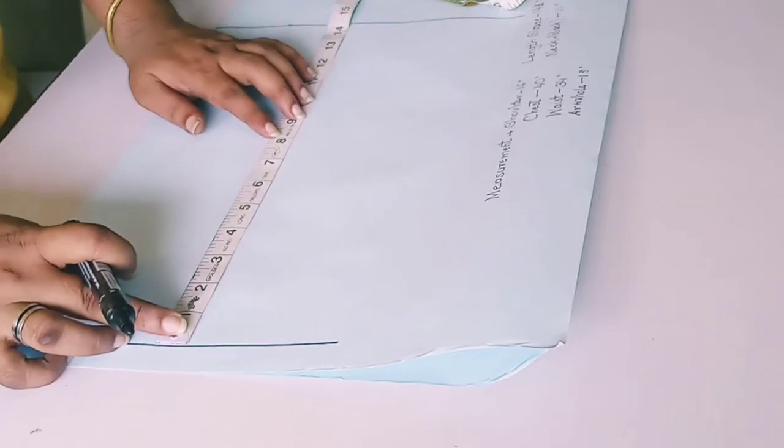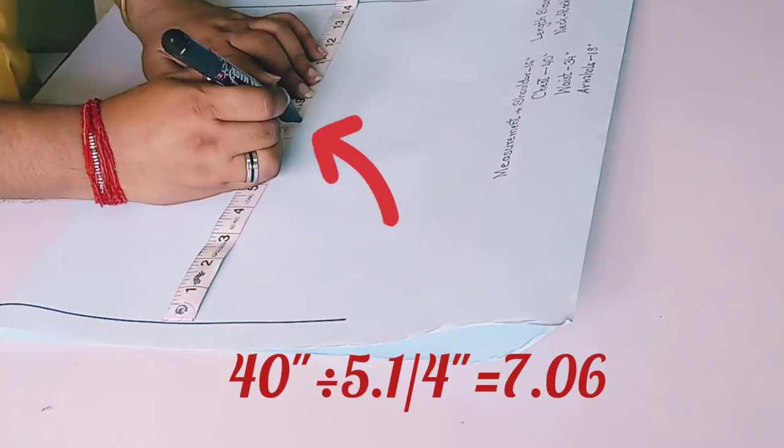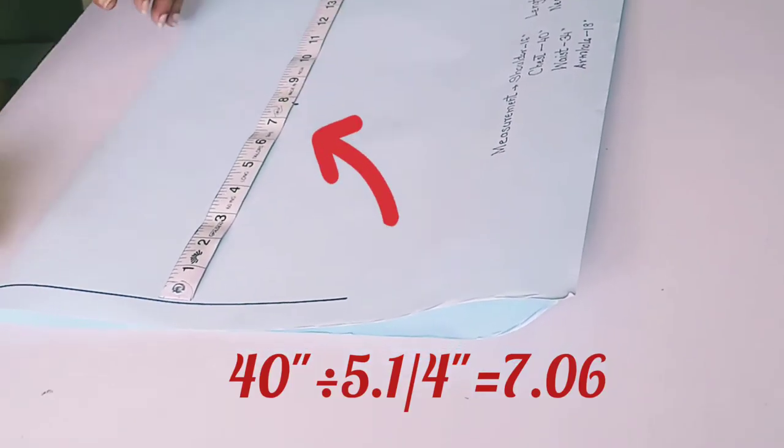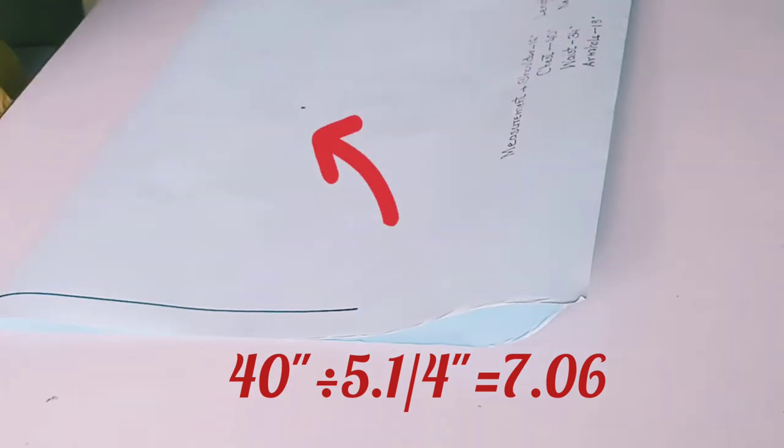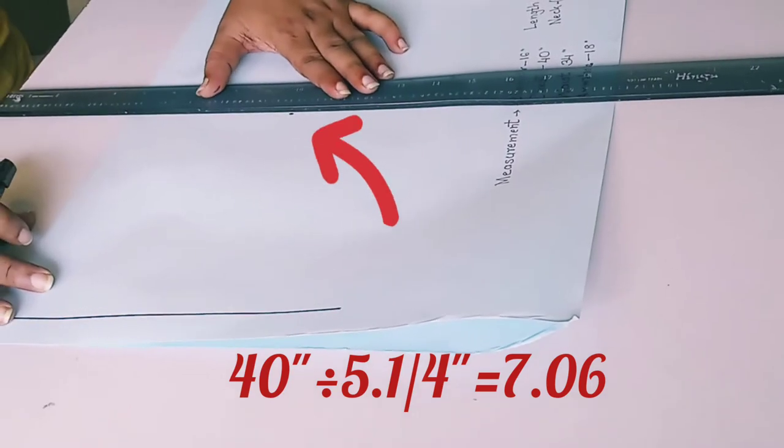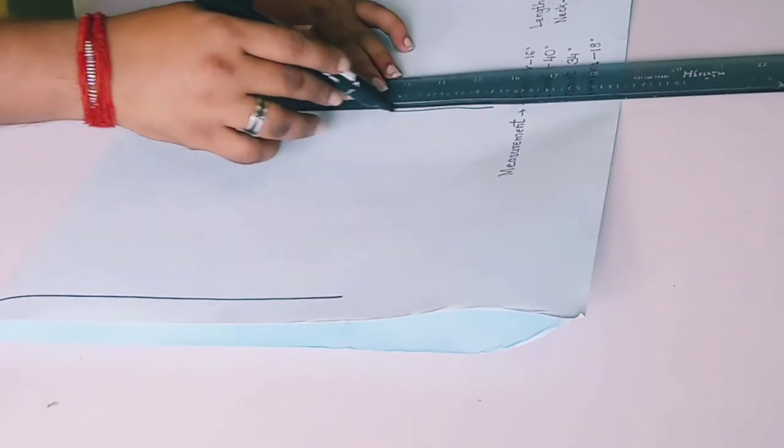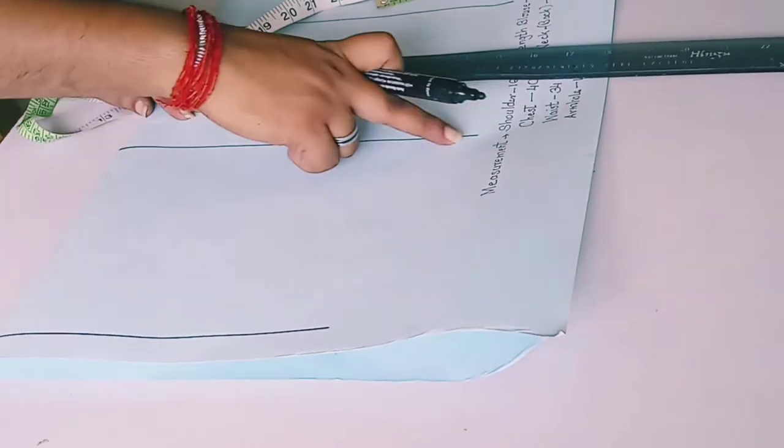Now we are going to mark armhole drop. From the formula, we have the chest 40 inch, so we'll take 40 divided by 5 and 1/4 inch, that is 7.6. This is your armhole drop, 7.6. On that marking you have to mark chest line. This is your chest line.